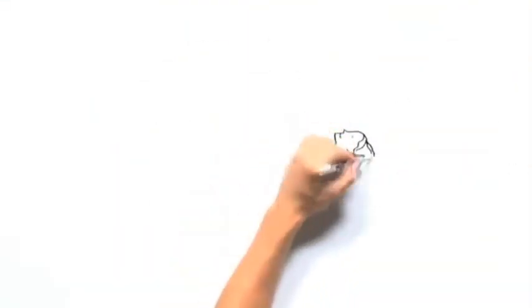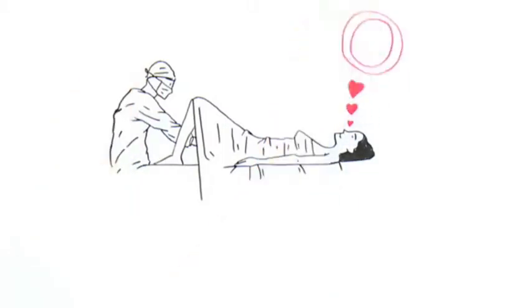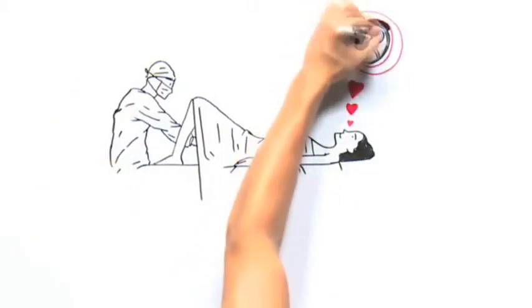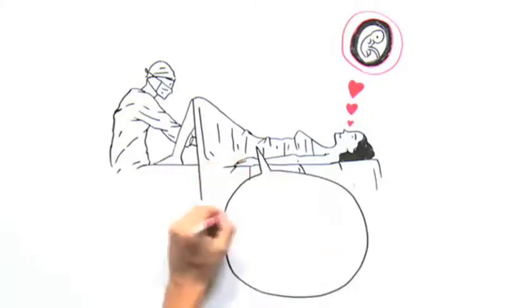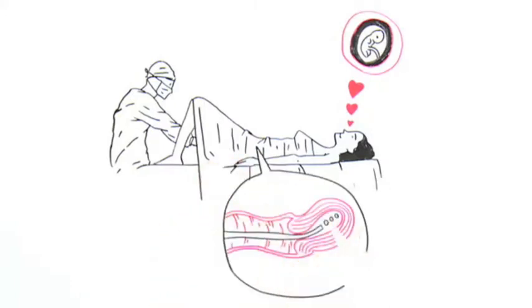The final procedure is the embryo transfer. It does not require anesthesia. It is a very exciting and happy moment when the idea of having a baby starts to feel more real. The embryos judged to be the best are transferred to the patient's uterus through a thin plastic catheter, which goes through the vagina and the cervix.